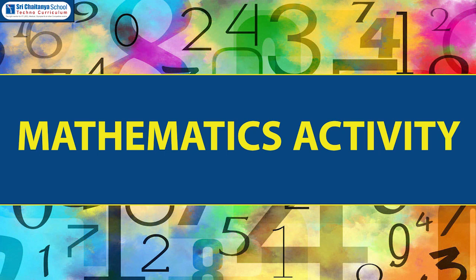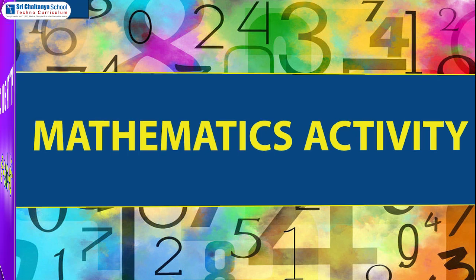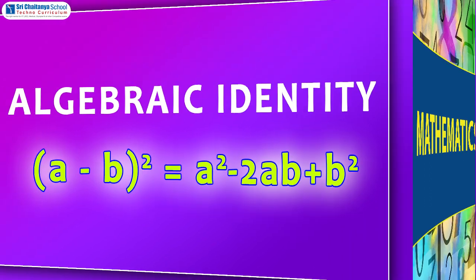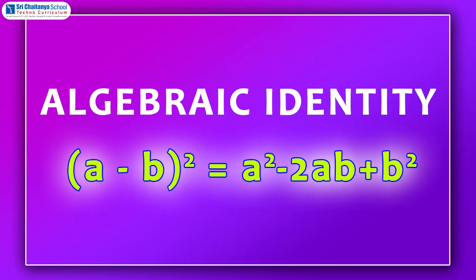Children, let us discuss an important algebraic identity: (A-B)² = A² - 2AB + B², by using a mathematical activity.